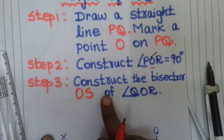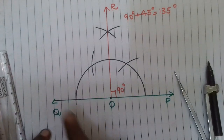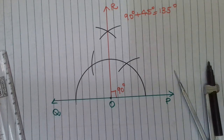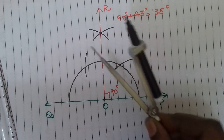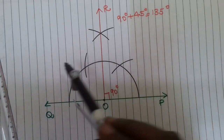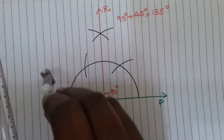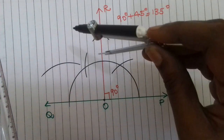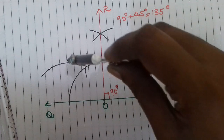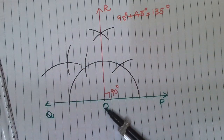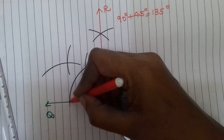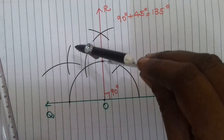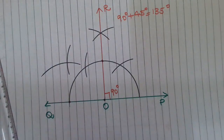Construct the bisector OS of angle QOR. Using the compass, we construct the bisector at the particular point. You can cut the bisector at the points where the arcs intersect, and we will find the 45-degree construction.